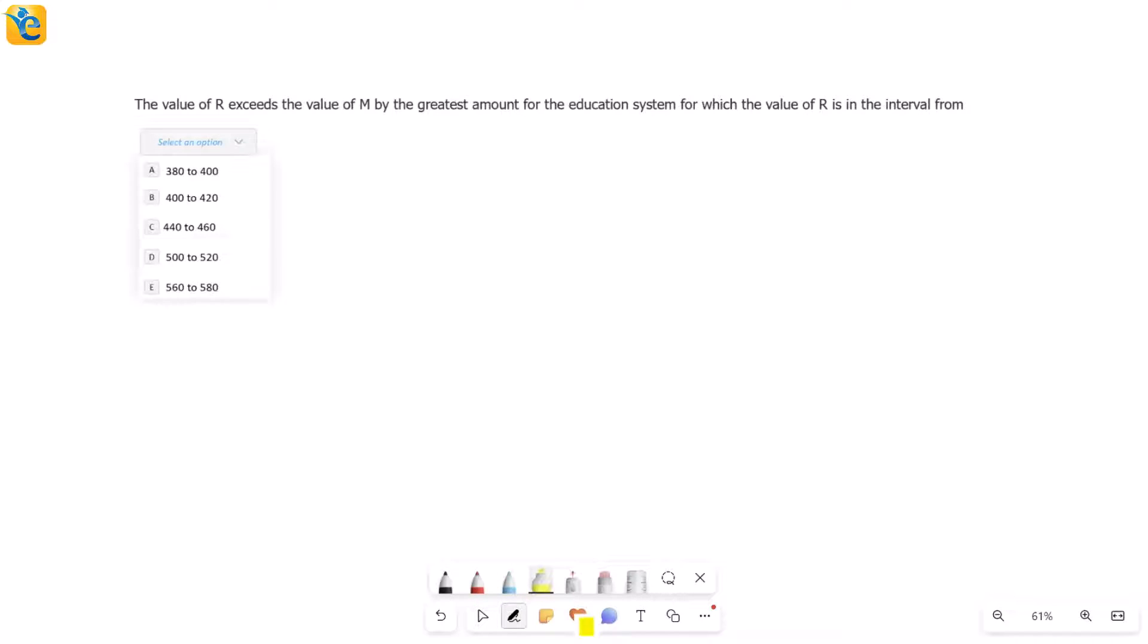Here. This is value of R exceeds the value of M by the greatest amount for the education system. So we're talking about a specific education system for which R exceeds M by the greatest amount for this education system for which the value of R is in the interval this. So basically there are two, three things we have to do. First of all, we have to understand where is it that R exceeds M? Then we have to see where is it that it exceeds by the greatest amount? Then once we find this particular education system, then for this system you need to find R. That's all we have to do.